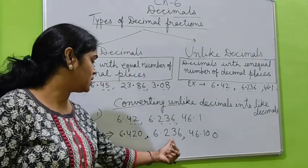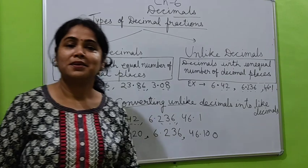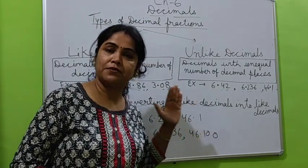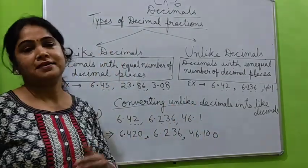So now each has three decimal places: 1, 2, 3; 1, 2, 3; 1, 2, 3. So these decimals have been converted into like decimals.